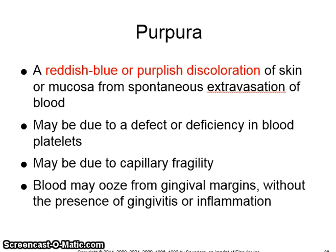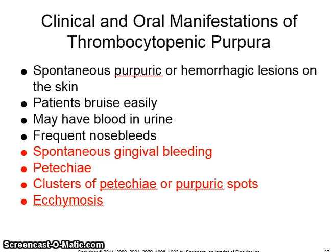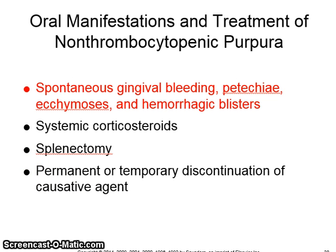Purpura is a reddish blue or purplish discoloration of skin or mucosa from spontaneous extravasation of blood. It may be due to a defect or deficiency in blood platelets or capillary fragility. Blood may ooze from gingival margins without the presence of gingivitis or inflammation. Clinical manifestations of thrombocytopenic purpura include spontaneous gingival bleeding, petechiae, clusters of petechiae or purpuric spots, and ecchymosis. In non-thrombocytopenic purpura, manifestations include spontaneous gingival bleeding, petechiae, ecchymosis, and hemorrhagic blisters.